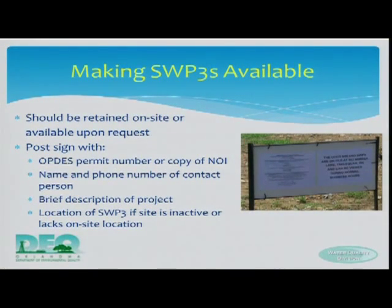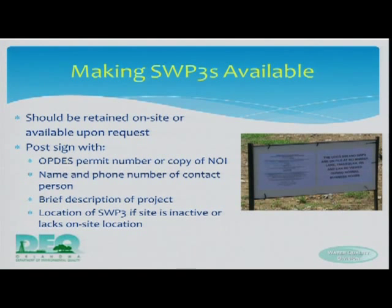You need to keep the SWP3 on your site and it needs to be available if we come out to do an inspection. If there's a sign posted with a phone number where we can call and you can get that SWP3 to us fairly quickly — within a few hours — that's fine. But you need to have your permit number on there, a copy of the notice of intent, the name and phone number of the contact person, and a brief description of the project.